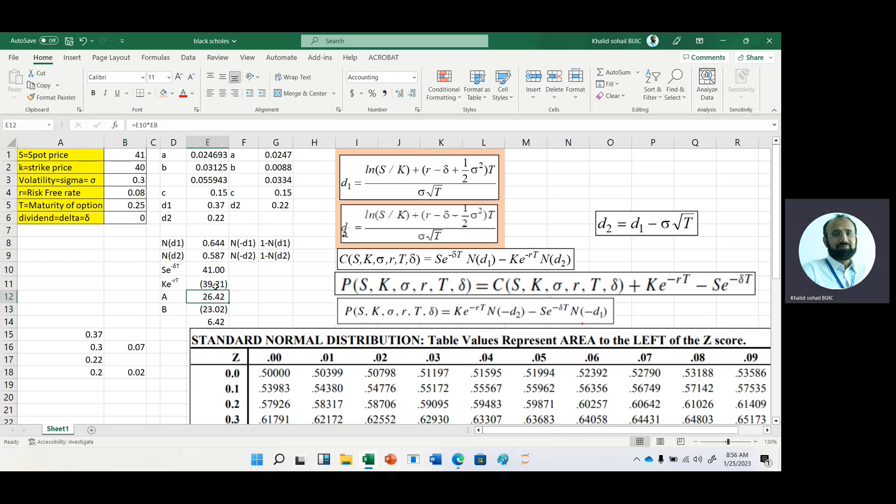I think we have some mistake. Let me check. A is 26 and B is 23. Just change this negative sign. Make the difference of these two: 26 minus this one. That is 3.40. This is basically the call option price.